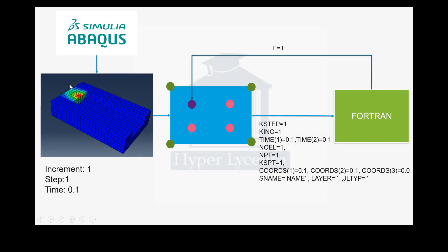Let's look at a concrete example. We have a model in Abacus with many elements. In the first increment of the first step, we are at 0.1 seconds. Abacus takes the first element and sends data — step number, increment number, time, element number, coordinates — for the first integration point. You can see: step is 1, increment is 1, time is 0.1, element number is 1, integration point is 1, with the coordinates shown here.